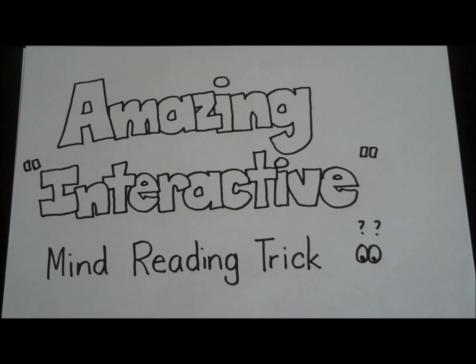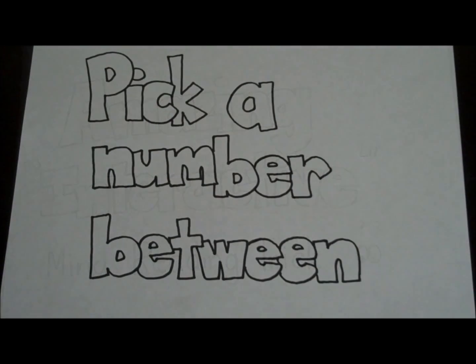Hey, what's up YouTube? It's Mitch, and it is time for an amazing interactive mind-reading trick. The first thing you do is you're going to pick a number between 1 and 31. Ready? Go!